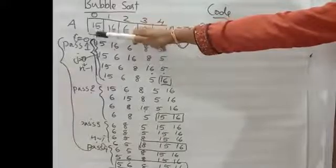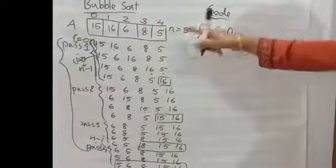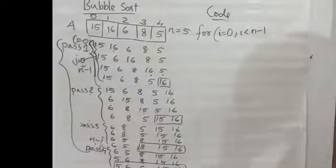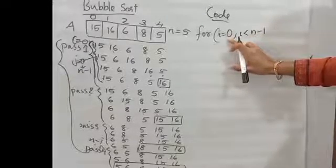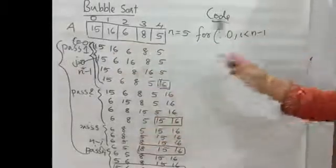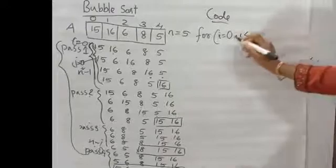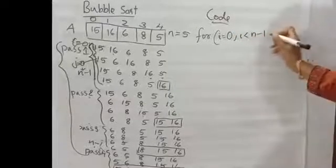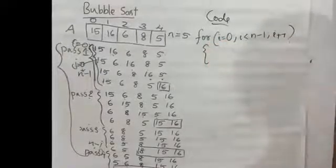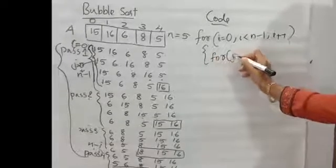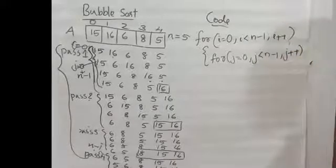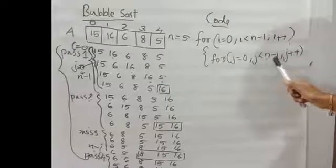Index starts with 0. i is equal to 0; condition is i less than n minus 1. Since we have 4 passes (pass 0 to pass 3), we go up to less than n minus 1. Then i is incremented. This is the outer loop. The inner loop uses j equal to 0, j less than n minus 1, j plus plus.